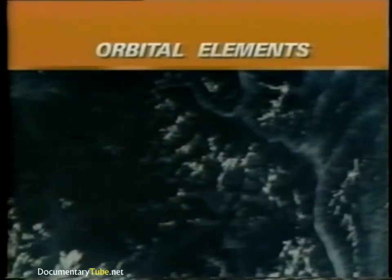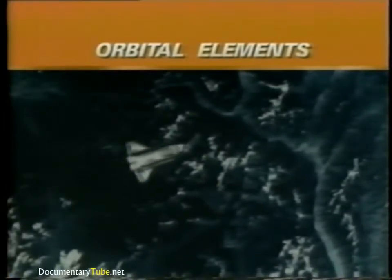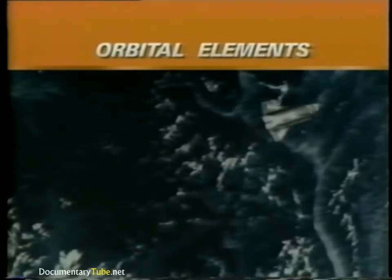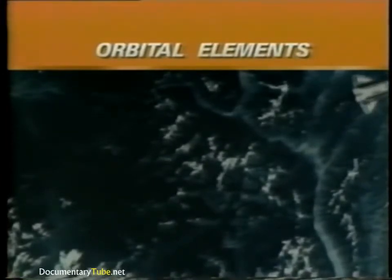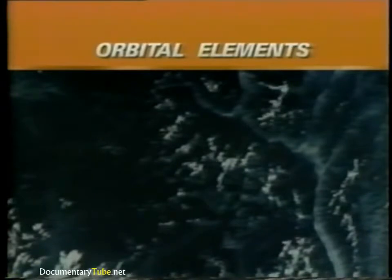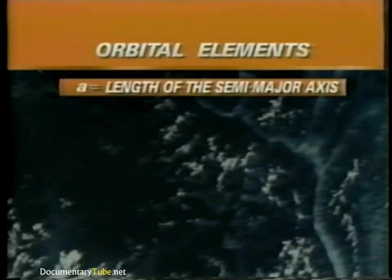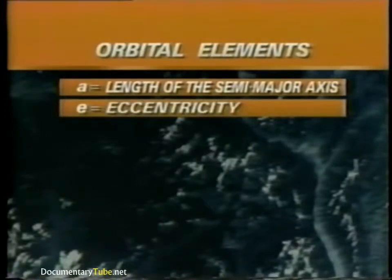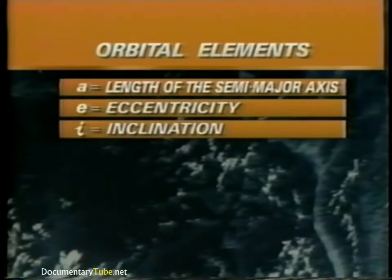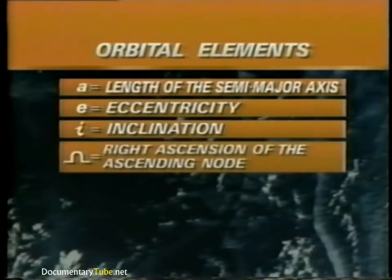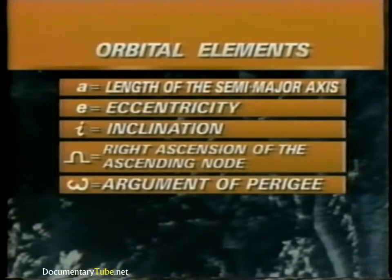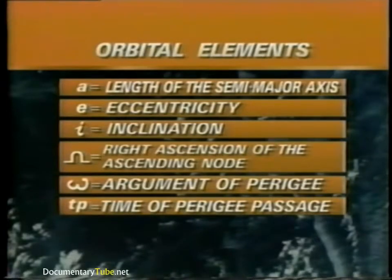There are six numbers called the orbital elements, which specify the size, shape, and orientation of an orbit in space, as well as the location of the spacecraft in the orbit. Based on an orbit which is an ellipse, the six orbital elements are: length of the semi-major axis, eccentricity, inclination, right ascension of the ascending node, argument of perigee, and time of perigee passage.